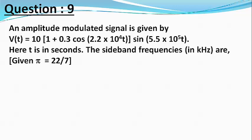v as a function of t equals 10 [1 + 0.3 cos(2.2 × 10⁴t)] sin(5.5 × 10⁵t)